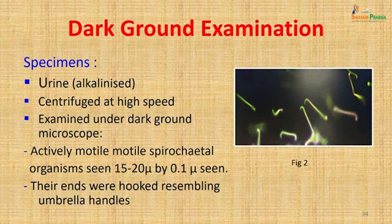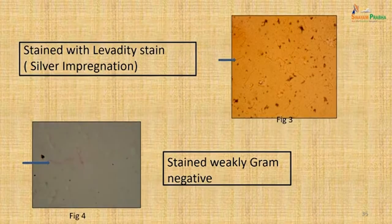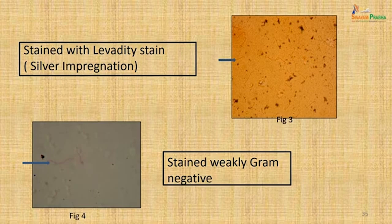A urine sample was collected, alkalinized, centrifuged at high speed, and examined under the dark-ground microscope. Actively motile spirochetal organisms were seen — 15 to 20 microns in length by 0.1 micron in width — with hooked ends resembling umbrella handles. This is a picture of what you can see under the dark-ground microscope showing the hooked ends of leptospira. The urine deposit was also stained with Levaditi stain showing dark brown spirochetal organisms, and weakly gram-negative organisms were seen on gram stain.